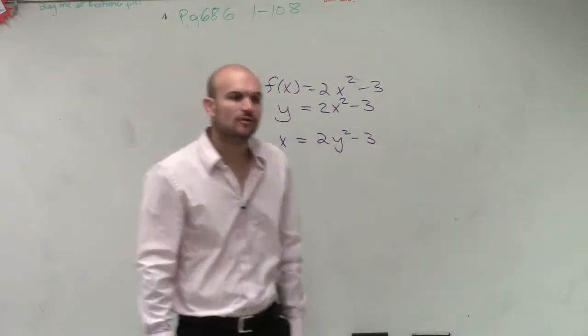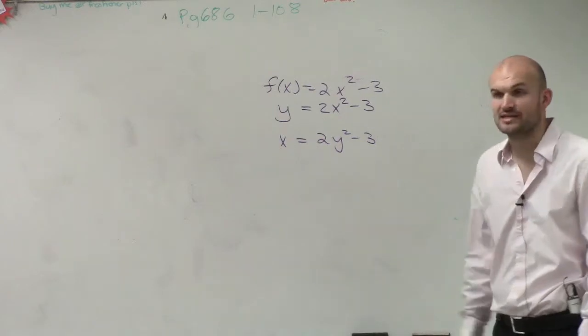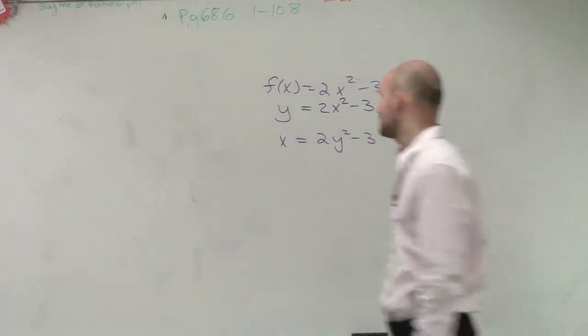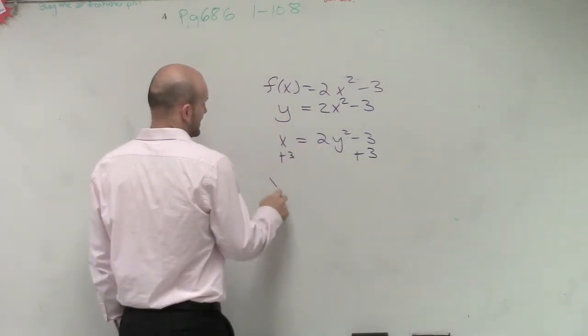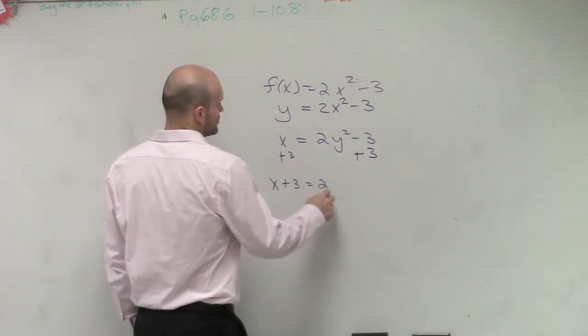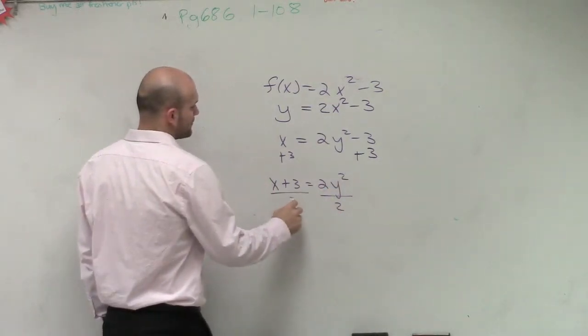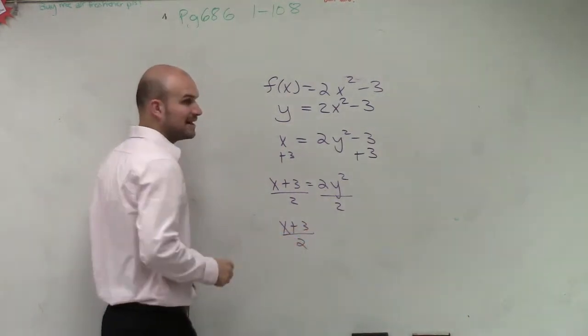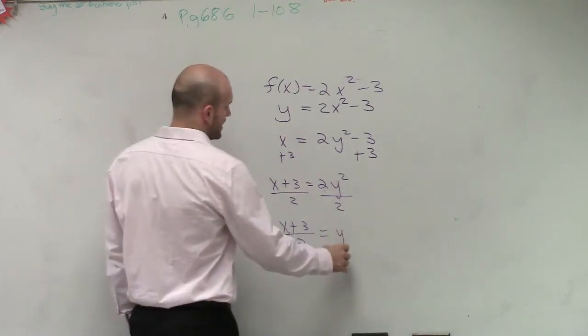And now we need to solve for y. So to solve for y, we're going to use our inverse operations. Whatever's happening to our variable, now we're going to undo it. So therefore, I'll add 3. So I get x plus 3 equals 2y squared divided by 2. So I have x plus 3 divided by 2 equals y squared.